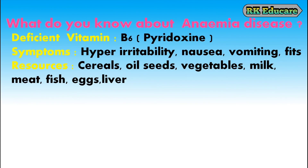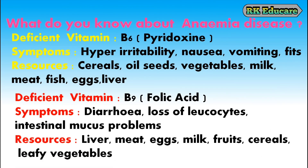What do you know about Anemia disease? Anemia disease is due to deficiency of either vitamin B6 or B9. When vitamin B6 (pyridoxine) is deficient, symptoms include hyperirritability, nausea, vomiting and fits. Vitamin B6 is available in cereals, oilseeds, vegetables, milk, meat, fish, eggs and liver.